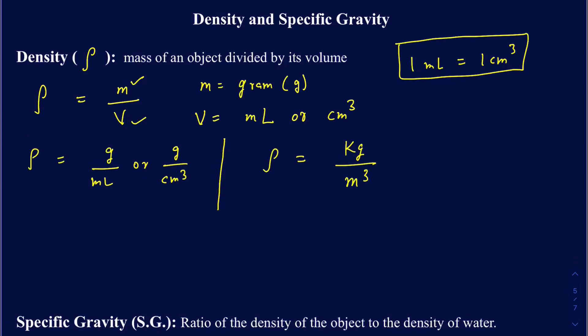If the object is irregularly shaped and doesn't have a standard volume formula, you can use the water displacement method. You insert the object into water, figure out how much water has been displaced, and that gives you the volume. It's often easier than calculating dimensions and gives fewer chances for error, even for irregular shapes.